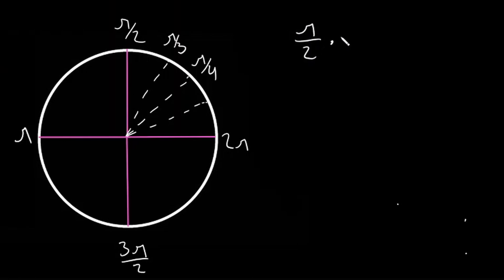So pi over 2 multiplied by 1 over 3, we just do 2 times 3 is 6, pi times 1 is pi, so it would be pi over 6. So this would be pi over 6 radians.